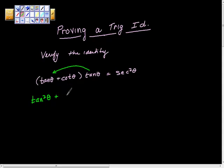Remember that cotangent is cosine theta over sine theta, and tan theta is the same as sine theta over cosine theta.